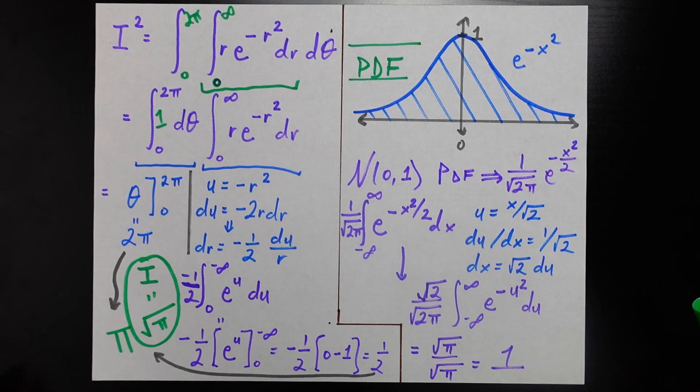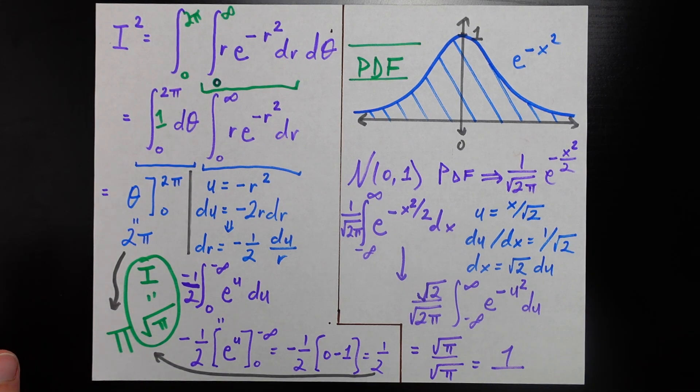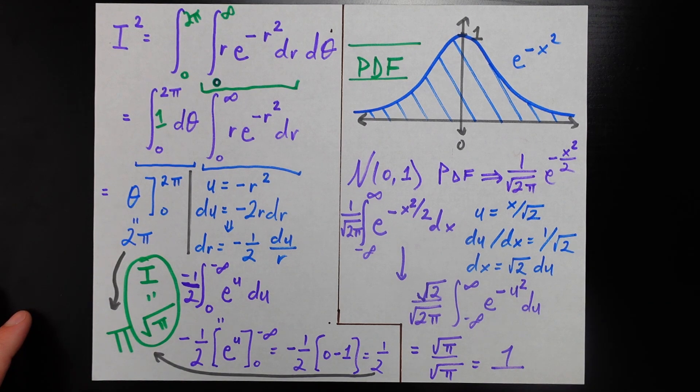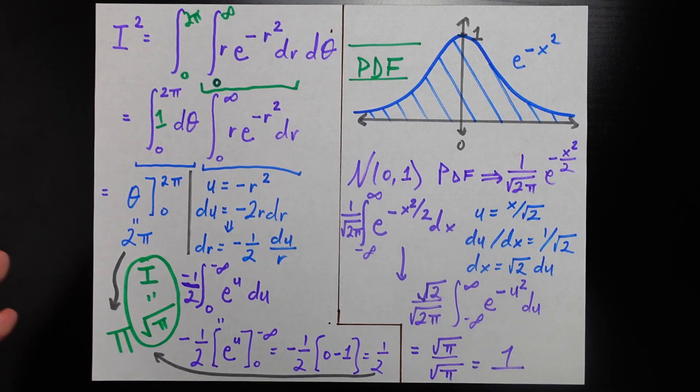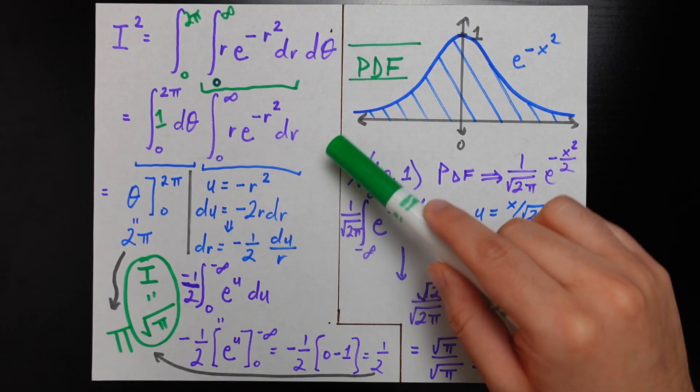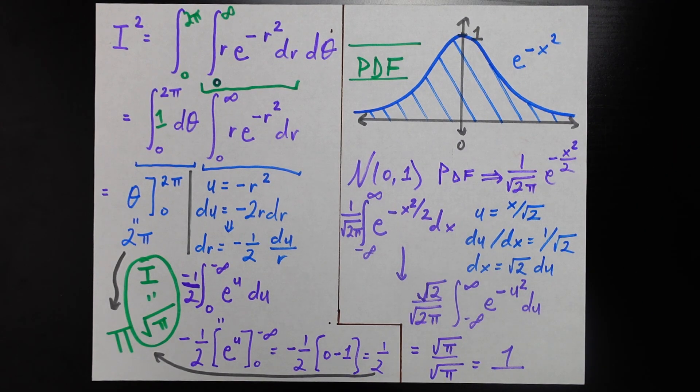Hopefully those who geek out over solving interesting integrals have that itch satisfied. Those more into data science, how does this connect? To understand that, I recommend you do something we should have done in the beginning: plot the function. If we plotted e to the negative x squared, it looks like this. What does that look like? To me, it looks like a bell curve, otherwise known as the normal PDF.